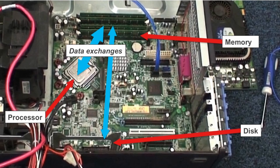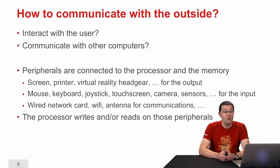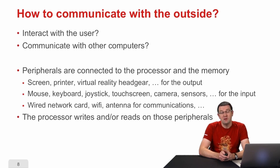We also have to look at how the computer communicates with the outside — how it interacts with the user and with other computers. For that purpose, there are peripheral devices connected to the processor and the memory. Regarding output — everything sent to the outside from the computer — there is the screen, the printer, loudspeakers, etc. Regarding input — when we give instructions or information to the computer — there is the mouse, the keyboard, sensors, cameras, etc.